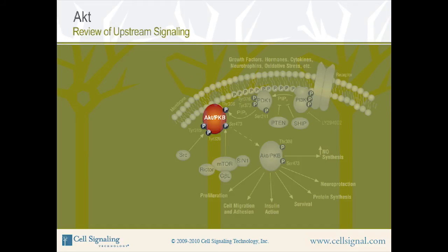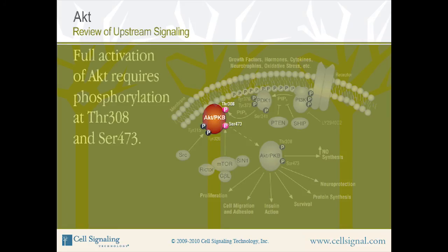Let's review AKT upstream signaling. Activation of membrane receptors by growth factors, cytokines, or other external stimuli results in signaling through PI3K to generate PIP3. This recruits AKT to the cell membrane where it is phosphorylated at threonine 308 by PDK1. AKT then undergoes a second phosphorylation at serine 473 by mTORC2. Full activation of AKT requires phosphorylation at both sites, and the activation state can be measured using phospho-threonine 308 and phospho-serine 473 specific AKT antibodies. Active AKT phosphorylates many downstream targets to promote cell proliferation, cell migration, insulin action, survival, protein synthesis, neuroprotection, and nitric oxide synthesis.